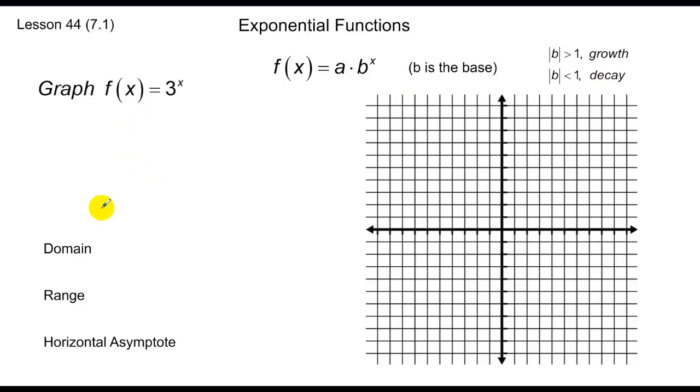We're going to be asked to graph this, find its domain range, and state its horizontal asymptote. The only way to do this, if we haven't done it before, is to make a chart. Let's pick some numbers. I can put a 0 in. Anything to the 0 power is 1.